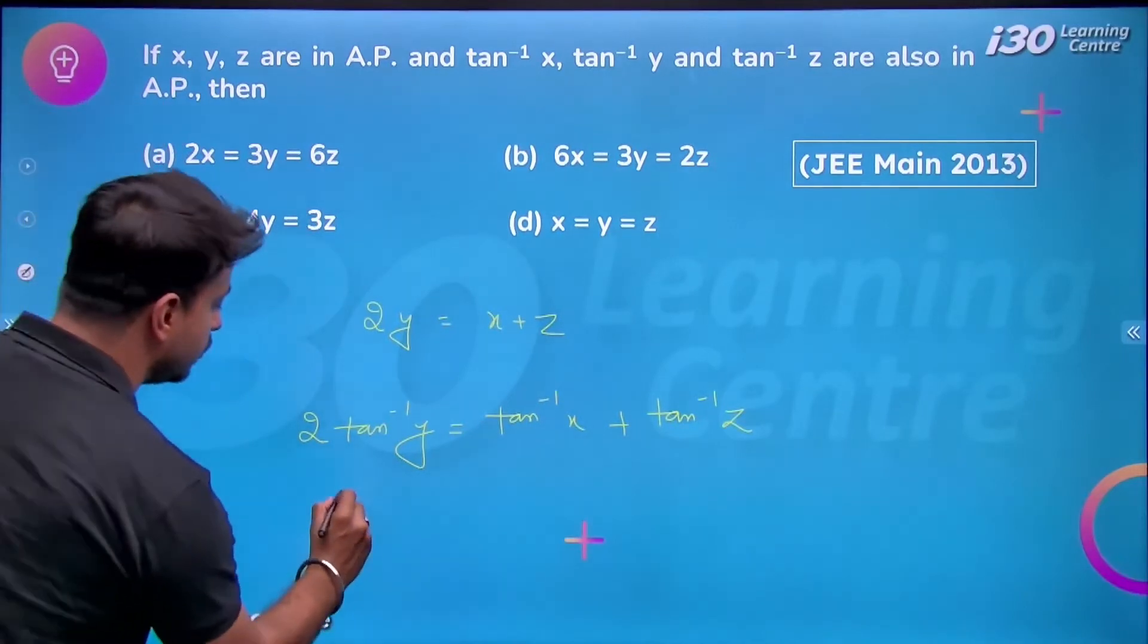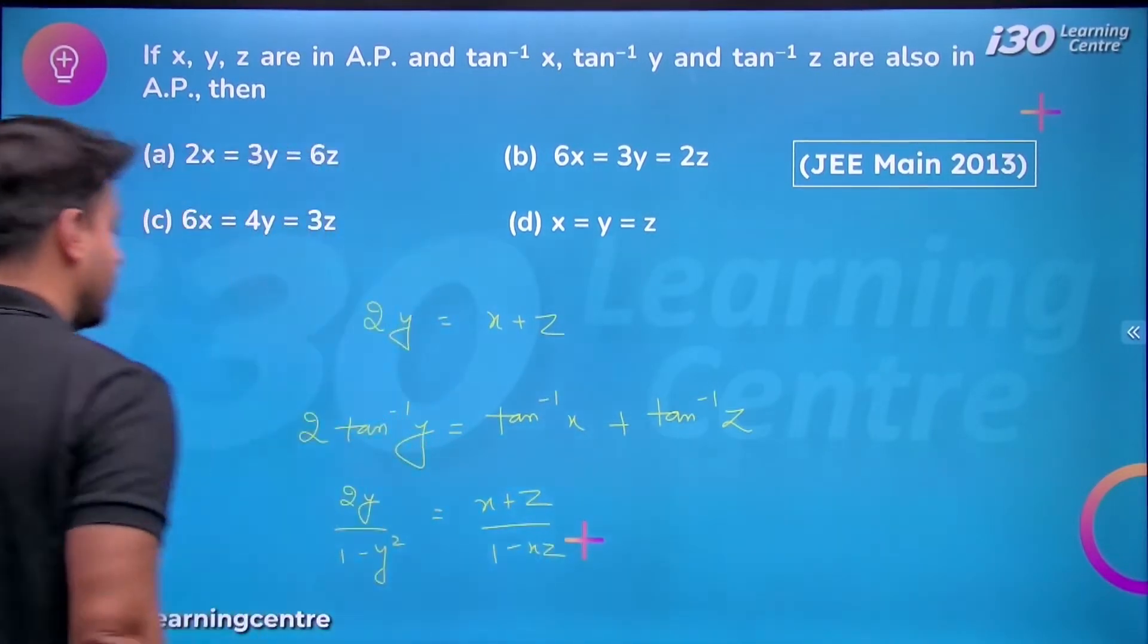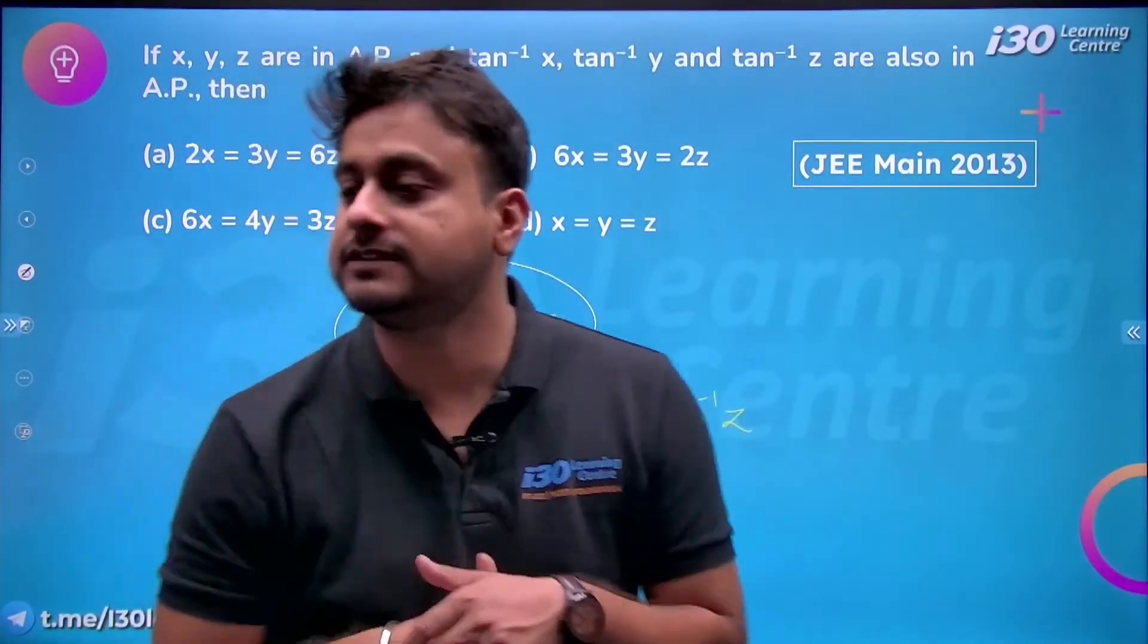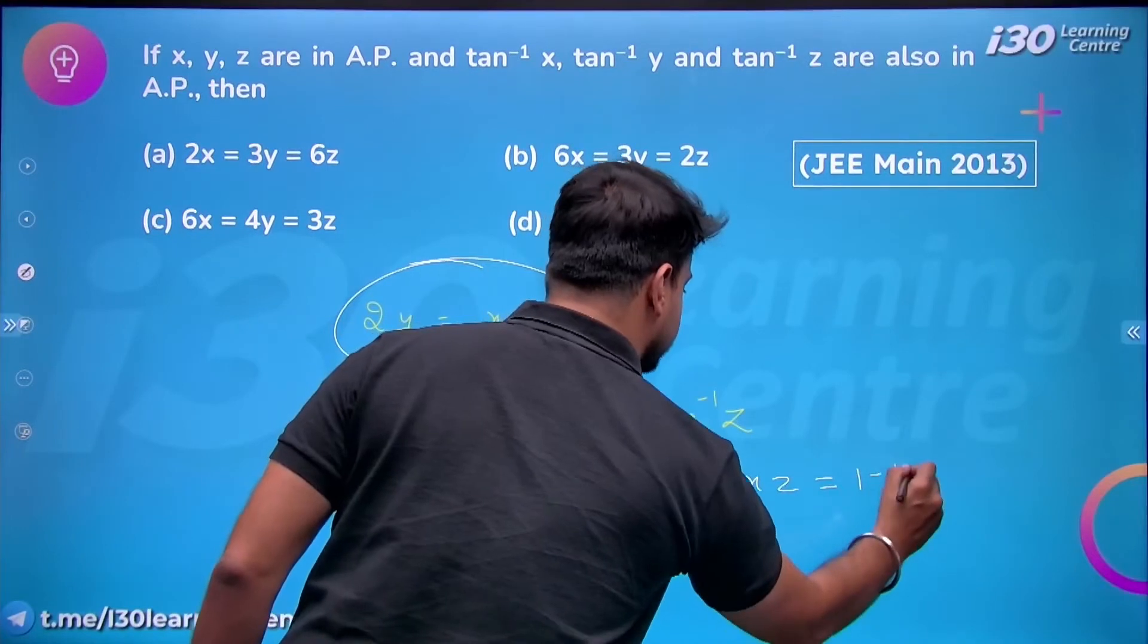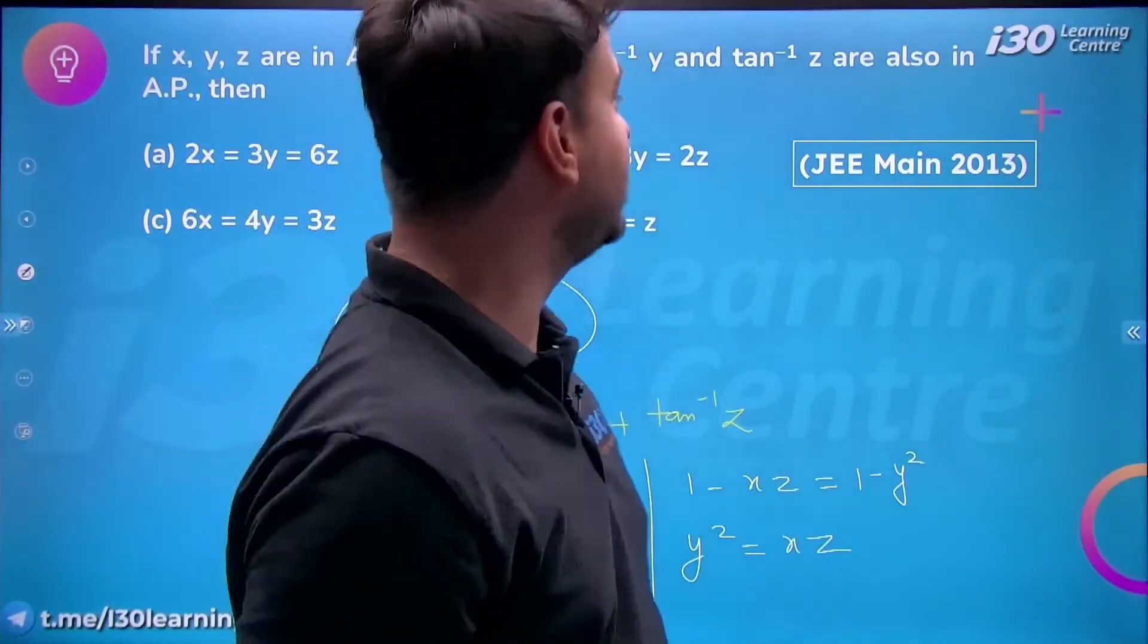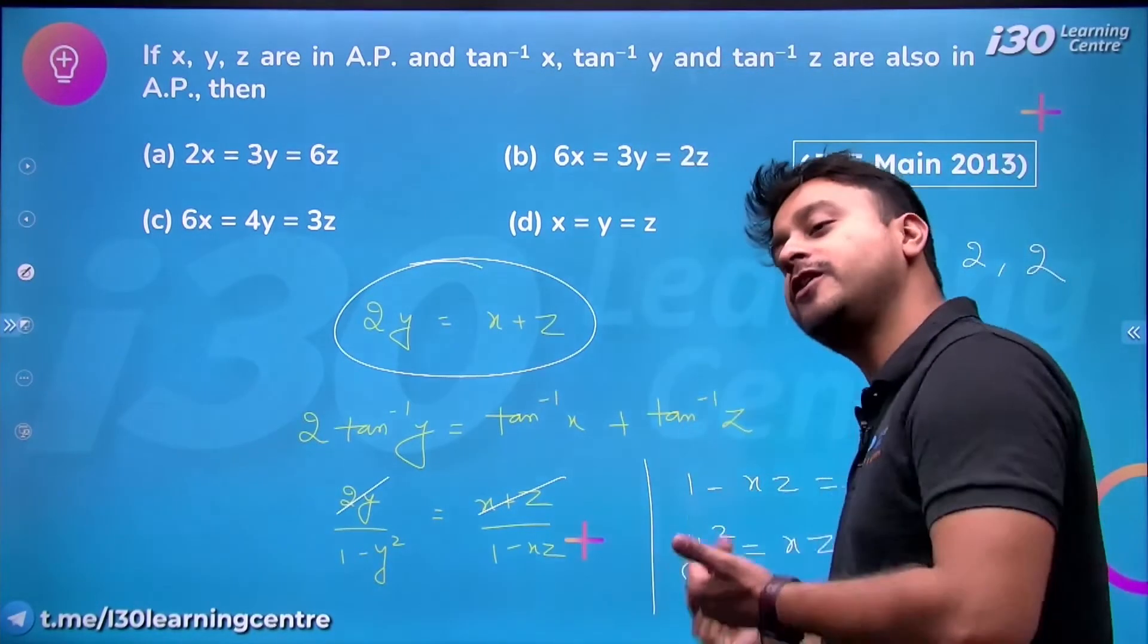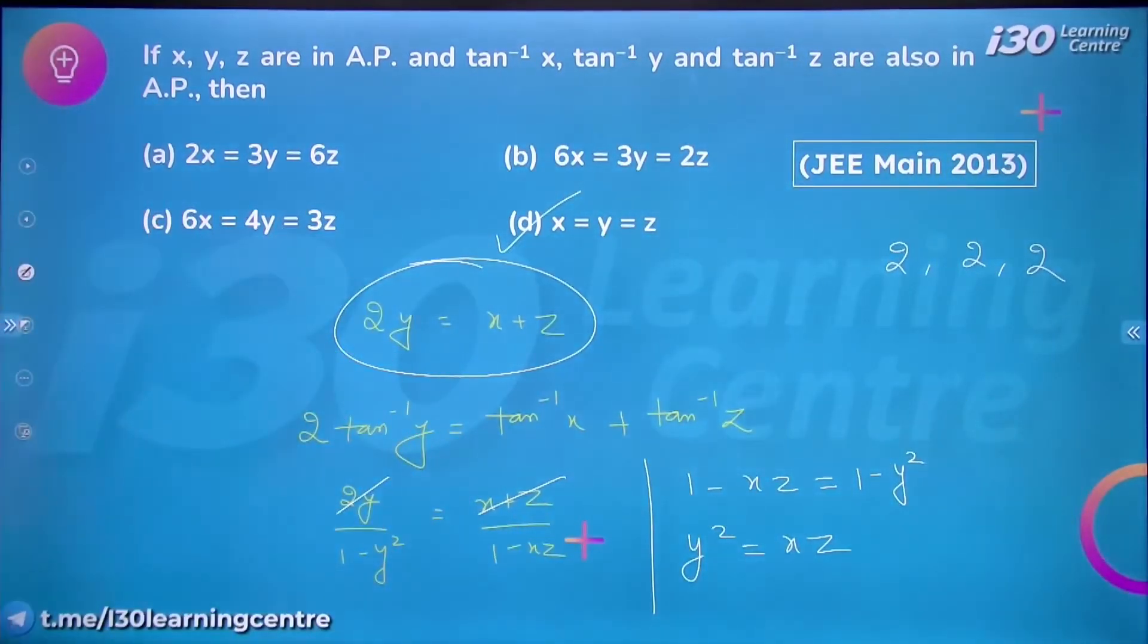From here I get 2y/(1 - y²) = (x + z)/(1 - xz). As we already know, x + z equals 2y because they are in A.P. When three things are in A.P., everyone knows 2b = a + c. When I compare, I will get 1 - xz = 1 - y². From here y² = xz. So x, y, z are in G.P. too. Which numbers are both in G.P. and A.P.? The numbers have to be the same. Like 2, 2, 2 are always in both A.P. and G.P. - in A.P. because common difference is zero, in G.P. because common ratio is one. That means x = y = z.